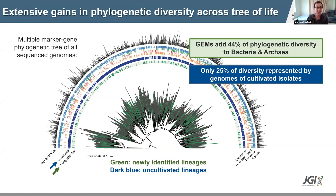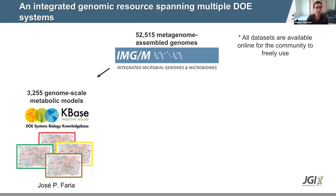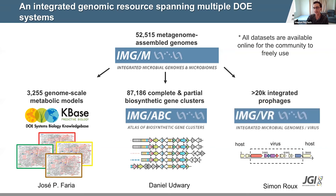Looking at the blue colored strip, you can see that there remain very large lineages in the tree of life that have never been cultivated before in the lab. All 52,000 genomes are freely available for the community to use in the IMG system. Through collaboration with other groups, we were also able to make available additional resources: Jose Ferria constructed genome-scale metabolic models available in KBase, Dan Udwari identified biosynthetic gene clusters, and Simon Roux identified integrated proviruses in these metagenome-assembled genomes.